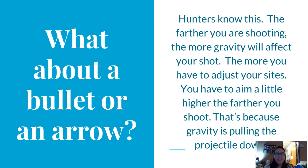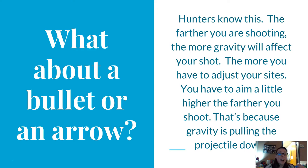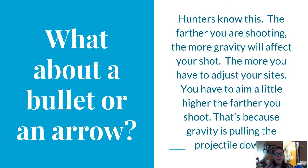Hunters know all about this. The farther that you're shooting, the more gravity is going to affect your shot. So you're going to have to adjust your sights. If you're shooting really far, you're going to have to aim a little bit higher than you would otherwise because gravity is going to pull it down. In the example of hunting, there are a lot of other factors that are going to affect your shot, like wind and stuff like that.